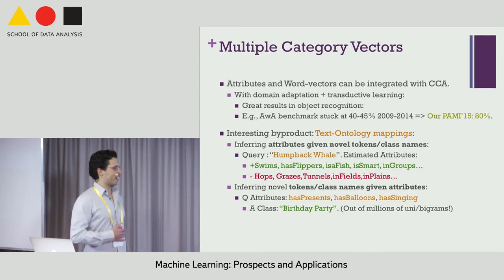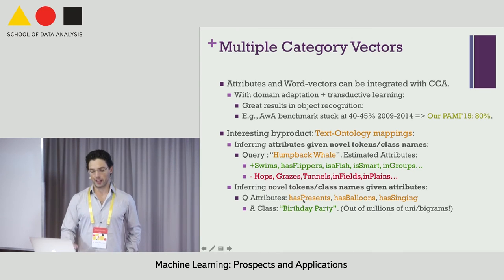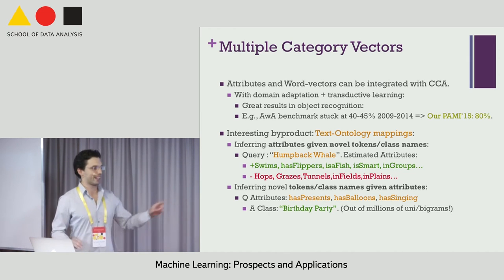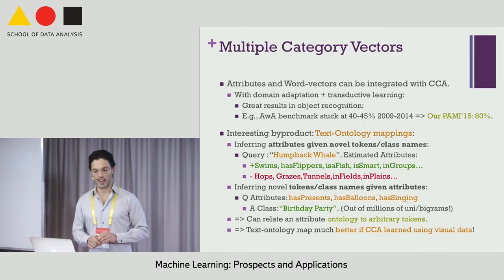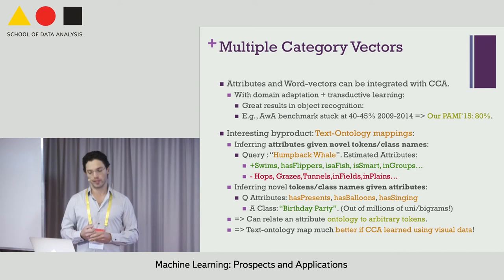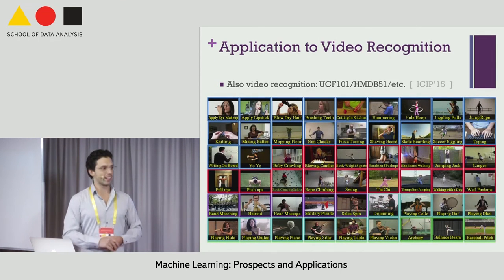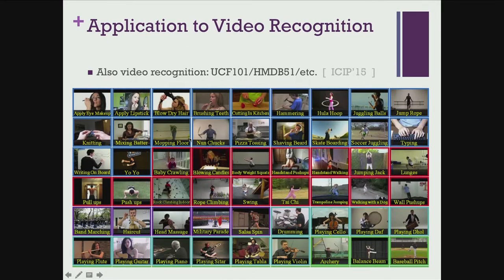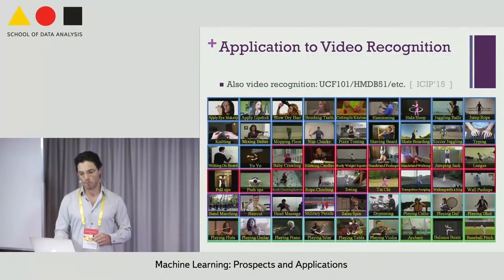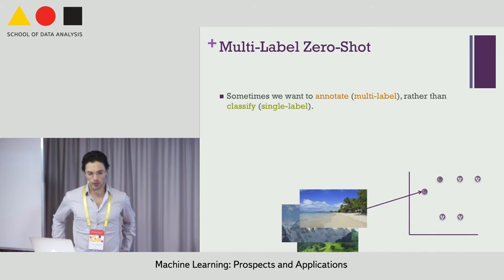You can also go in the other direction — from your ontology to arbitrary tokens. For example, inputting attributes like having presents, having balloons, and having singing, and getting back the token 'birthday party'. This is remarkable because it's selecting from millions of unigrams and bigrams across an entire dictionary, yet it still returns this as the rank-one result. We've also applied zero-shot learning to video recognition, recognizing activity classes like doing makeup, lipstick, push-ups, hair cutting, and playing guitar — all with no training data via the zero-shot learning paradigm.